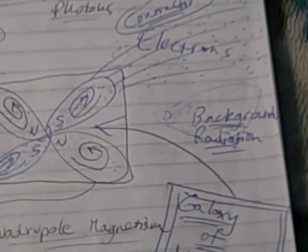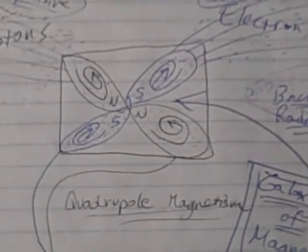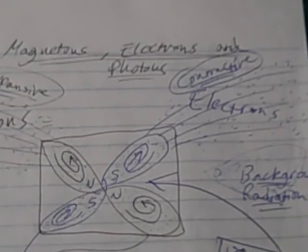So that's just the basic theory: magnetons, electrons, photons. Thanks, bye.